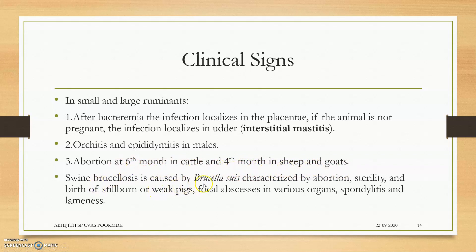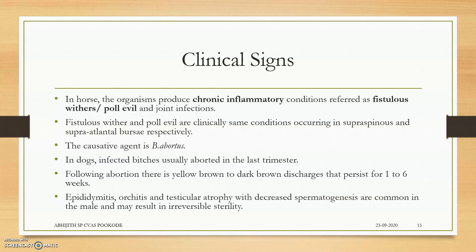Swine brucellosis is caused by Brucella suis, which also causes undulant fever in humans. In horses, the organism produces chronic inflammatory conditions referred to as fistulous withers or poll evil, and joint infections. Fistulous withers is infection of the supraspinous bursa, and poll evil is due to the supraatlantal bursa — mainly caused by Brucella abortus.